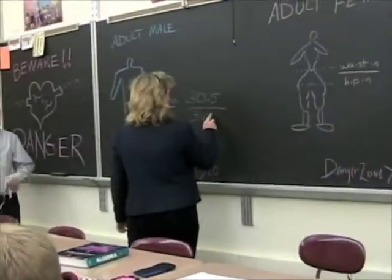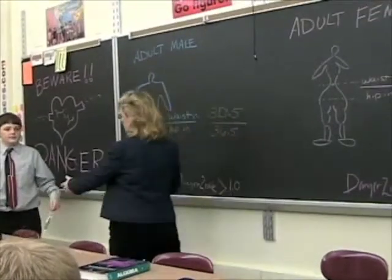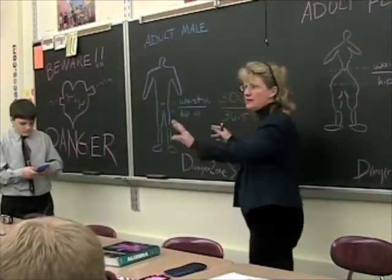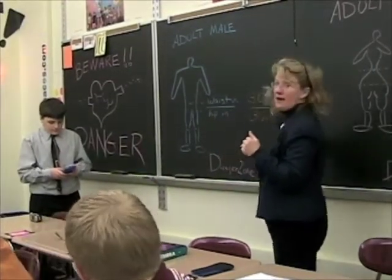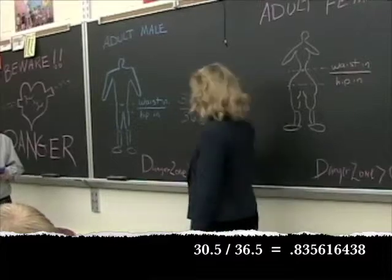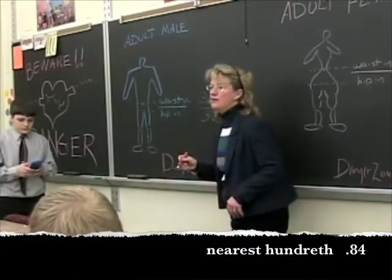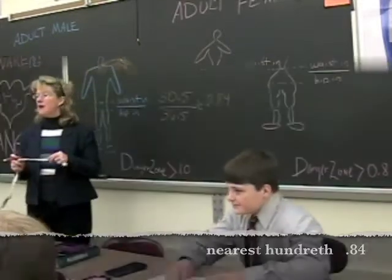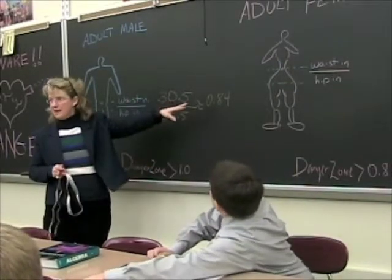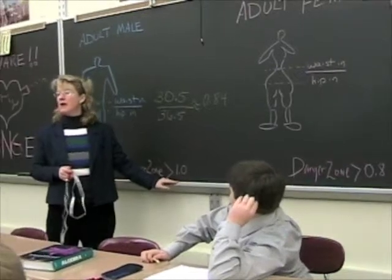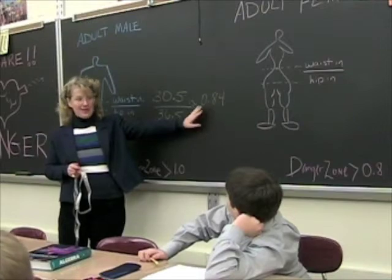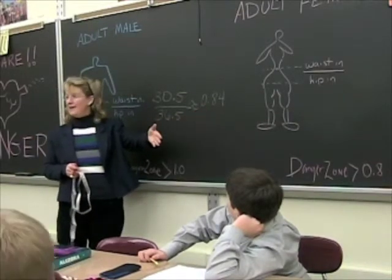You are not in danger. Now, let's simplify this ratio down to a decimal: 30.5 divided by 36.5 equals 0.83561643. Let's take it to the nearest hundredth — 0.834. Males are only in danger if their ratio, when simplified to a decimal, is greater than 1.0. He is down here at 84 hundredths, so this guy is not in danger.